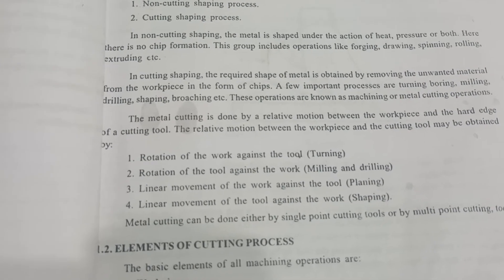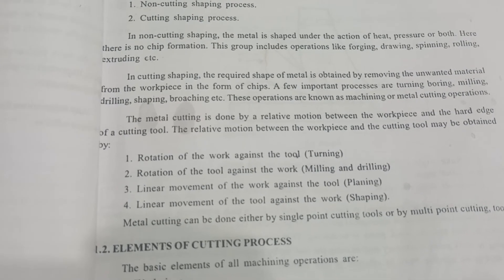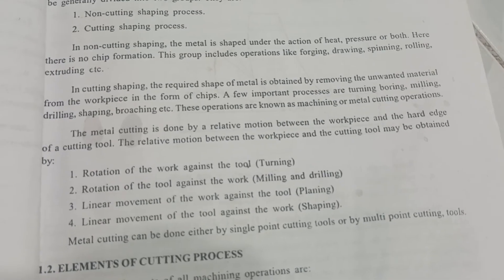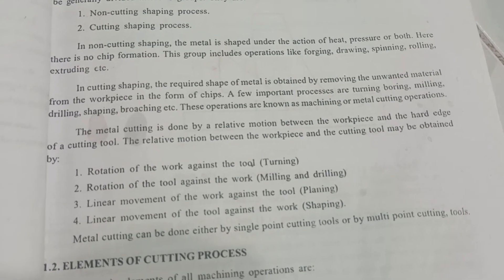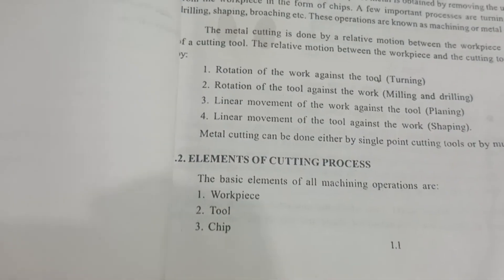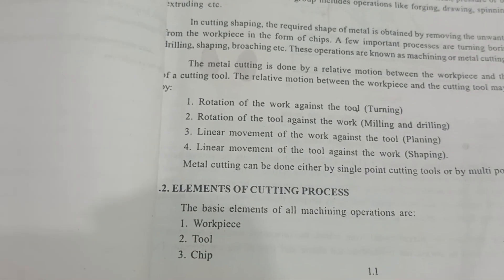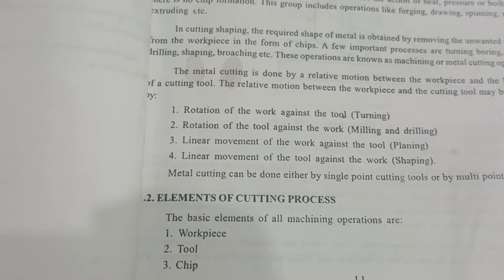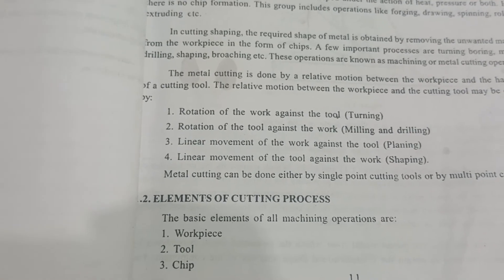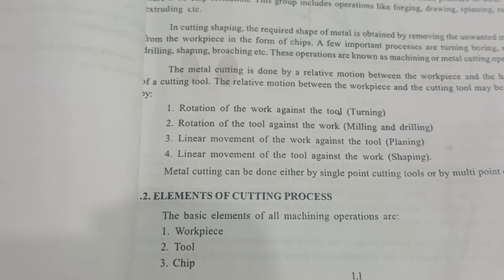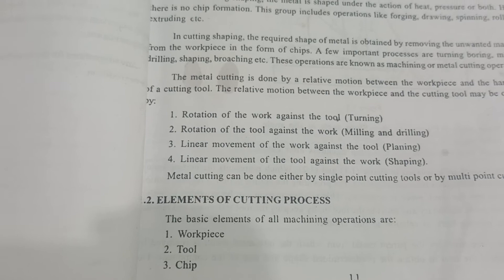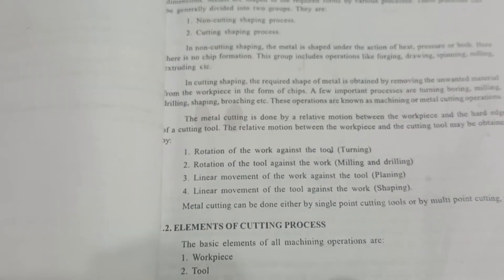Metal cutting can be done either by a single point cutting tool or by a multi-point cutting tool. The basic elements of the machining operation are the workpiece, the tool, and the chip.